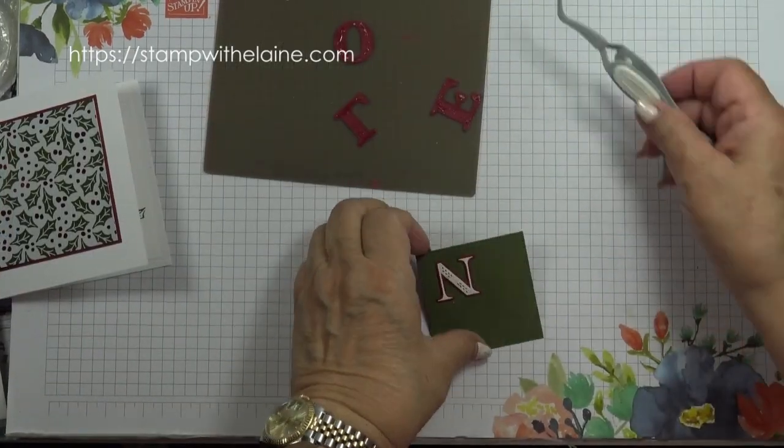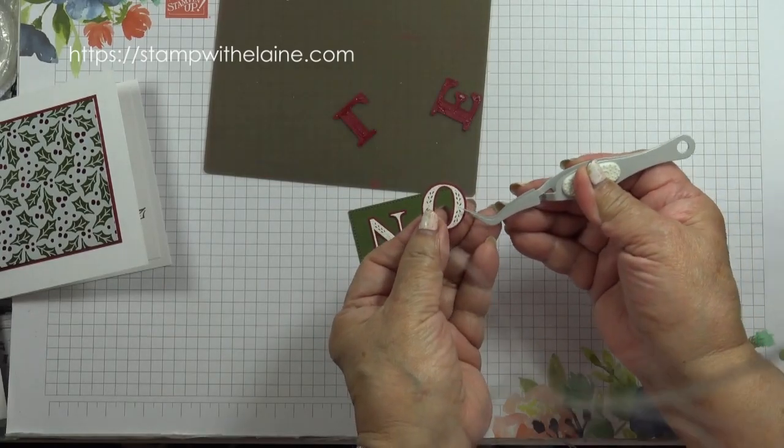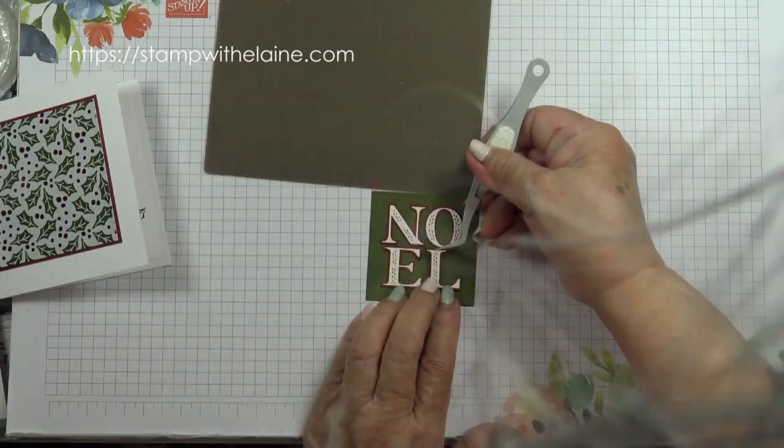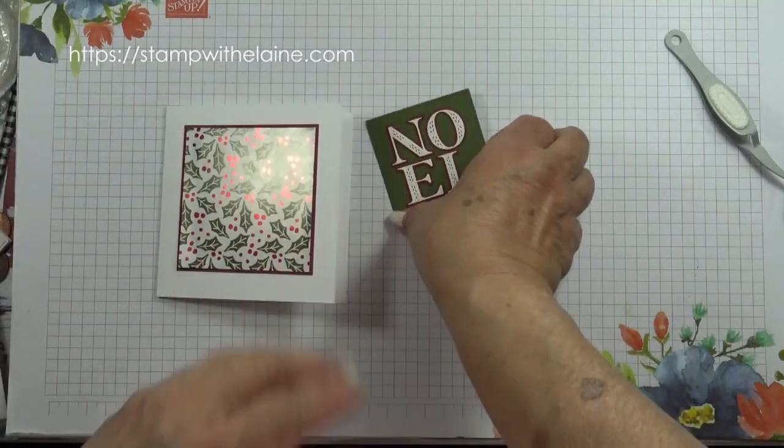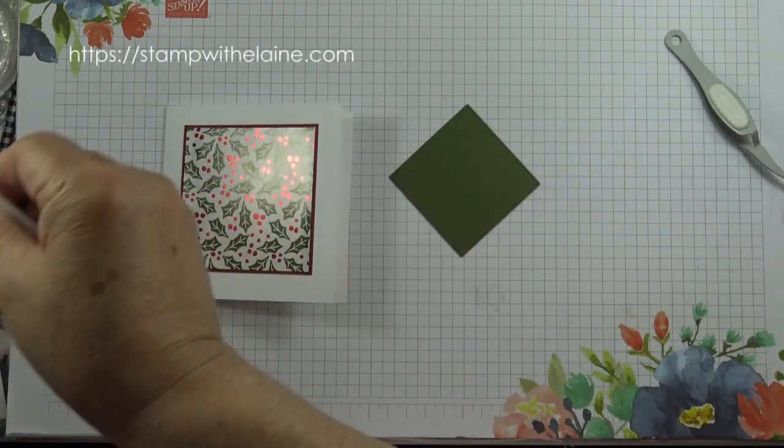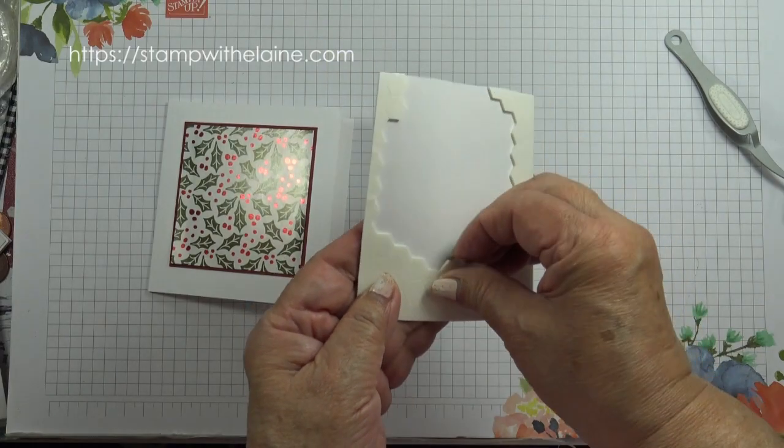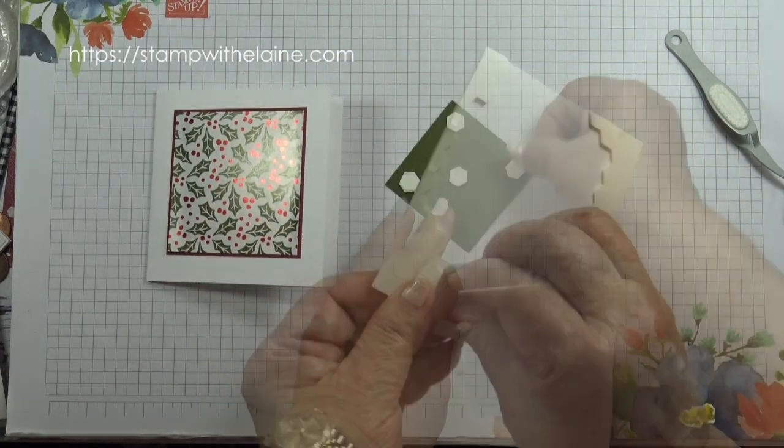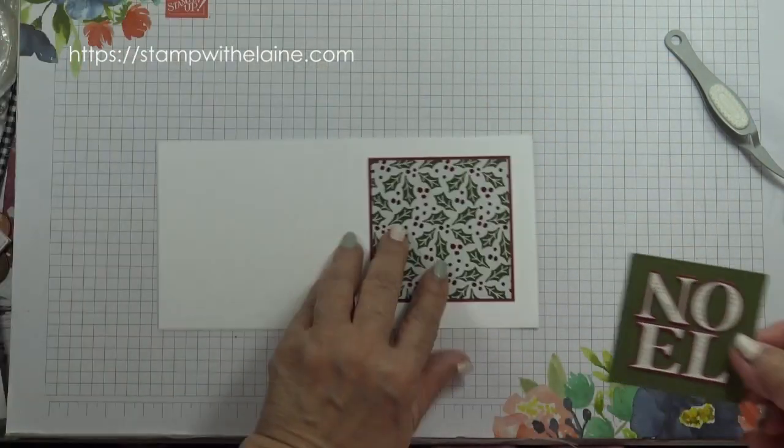Now that the letters are dry, I can stick it onto the card like so. Unfortunately, I didn't have to reposition it, but still, it's better to be on the safe side, isn't it? And then put dimensionals on the four corners and then pop it on the card front.